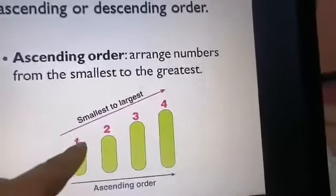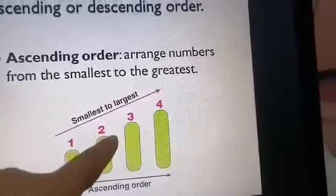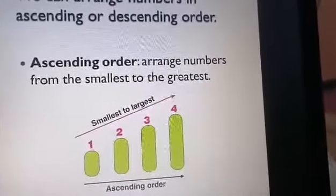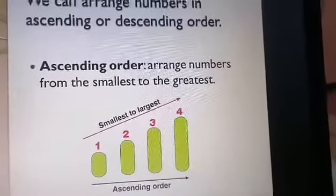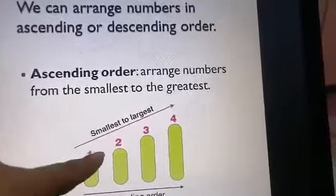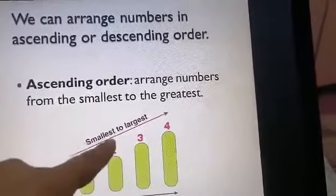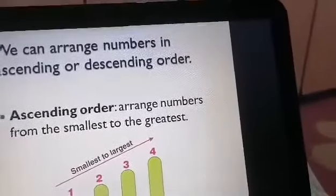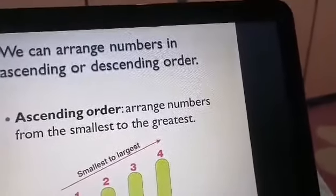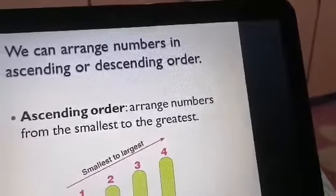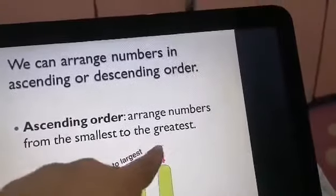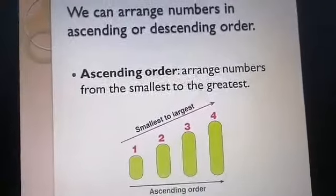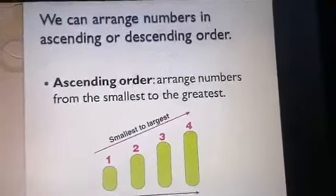As you can see here, we have numbers 1, 2, 3, and 4. Which number is the smallest? Excellent — 1, then 2, then 3, then 4. So we are arranging the numbers from the smallest to the greatest number. This is ascending order.